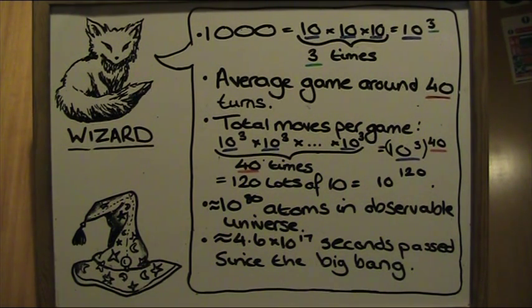The number of different positions per game from the very first move. It's so hard to imagine a number this big. This is ten with 120 zeros after it. So let's compare it to something we roughly can imagine. The number of atoms in the observable universe is ten to the power of 80. That's ten with 80 zeros after it.